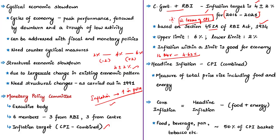The RBI governor discussed core inflation and headline CPI inflation. Headline inflation is the measure of total price rise within an economy, calculated using the consumer price index combined, which includes the entire basket of commodities including the food component and energy component. The target for headline inflation is fixed at 4 plus or minus 2 percentage. The base year for calculating CPI is 2012.